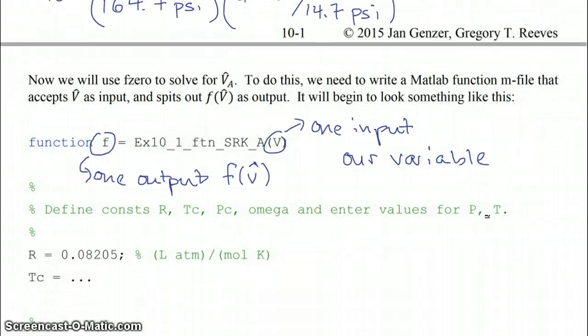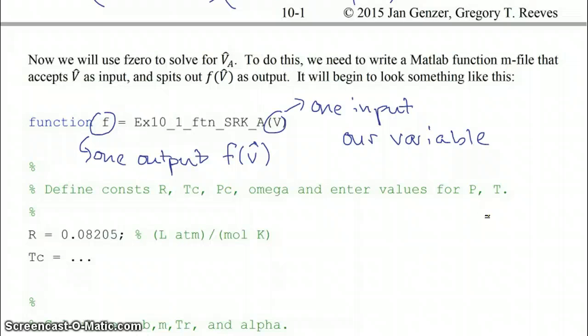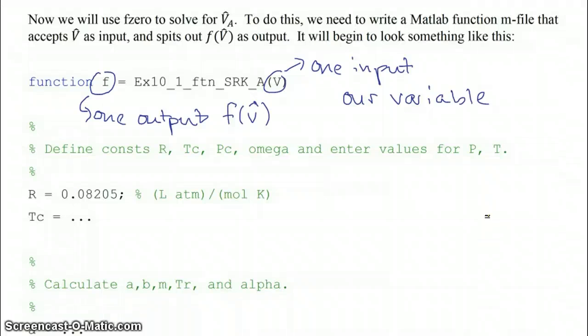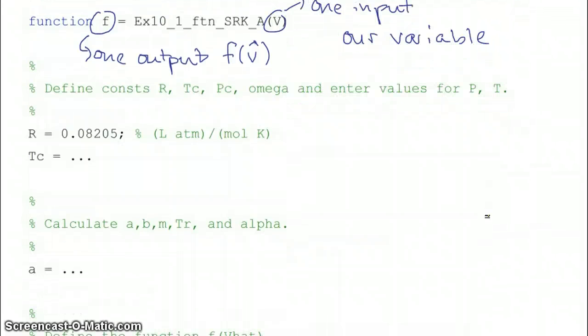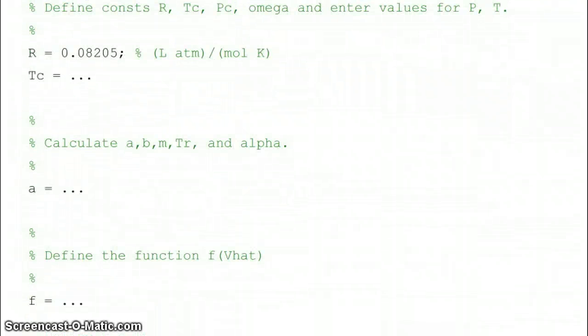In this function the first thing we're going to do is define all our constants and conditions: R, Tc, Pc, and omega, the last three of which being the gas specific constants, and then of course P and T, our pressure and temperature of our pipe. From those we're going to calculate the various things that need to go into the SRK equation of state, notably a, b, and alpha, and finally define our function f(V̂).